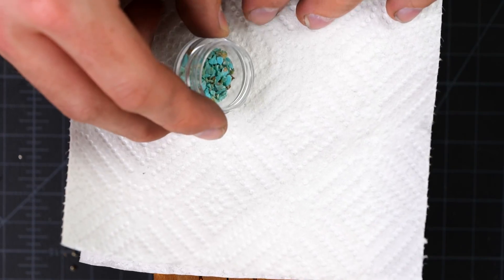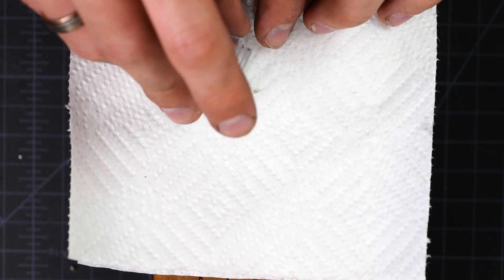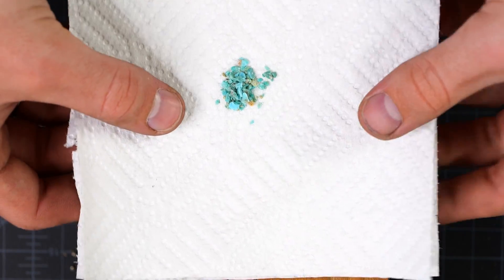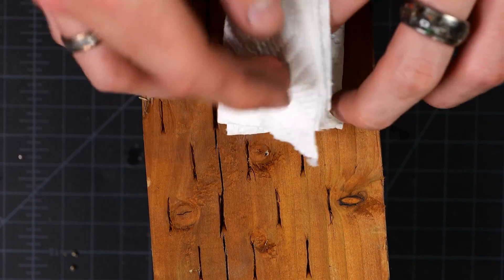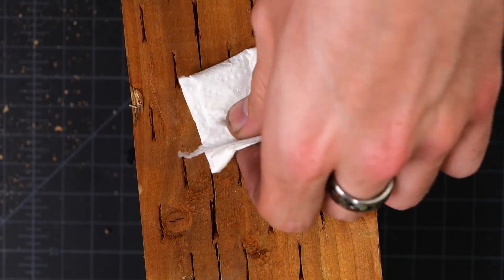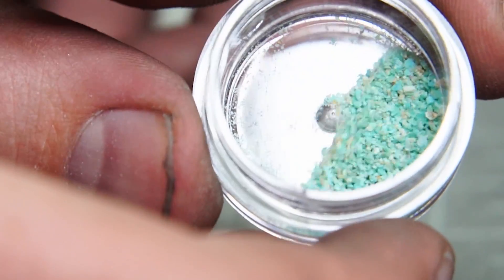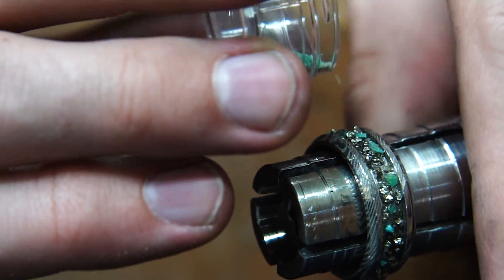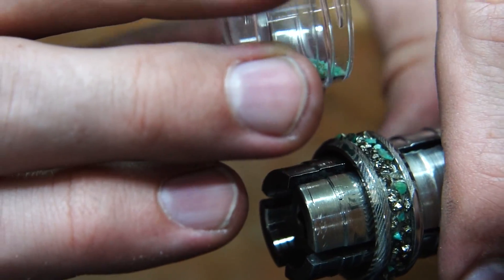Once I went all the way around the inlay, it didn't look quite as natural as I had hoped. So to solve that, what I'm doing is I'm taking the turquoise, wrapping it up in this paper towel, crushing it, getting it really small, and I'm going to go ahead and sprinkle that all throughout the rest of the inlay. That'll really help add some variety to the inlay of the ring and make it look a lot more natural.